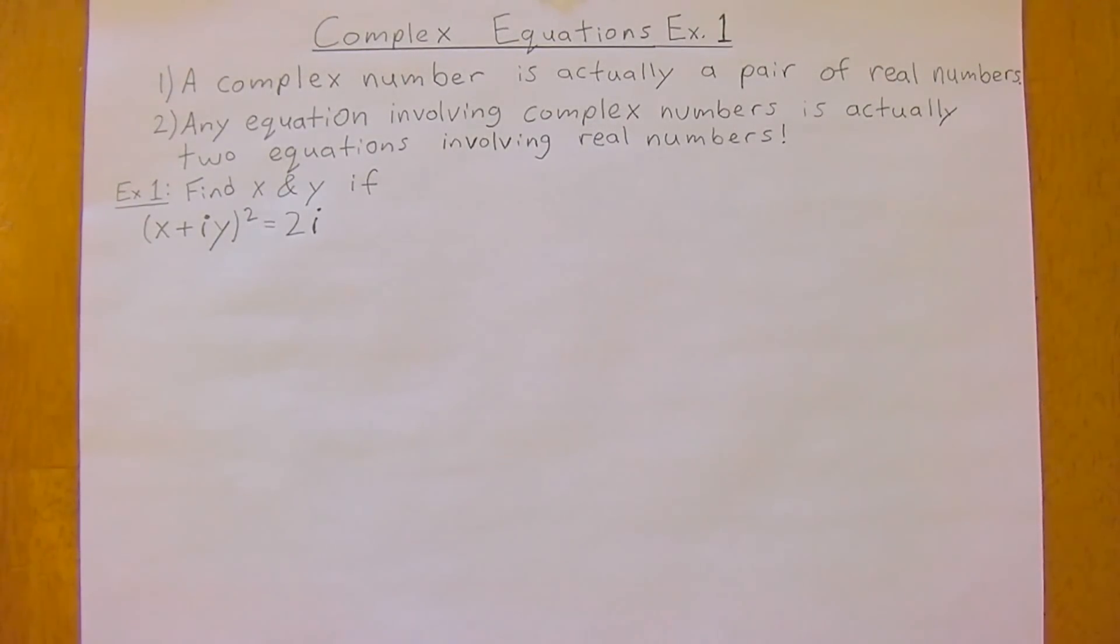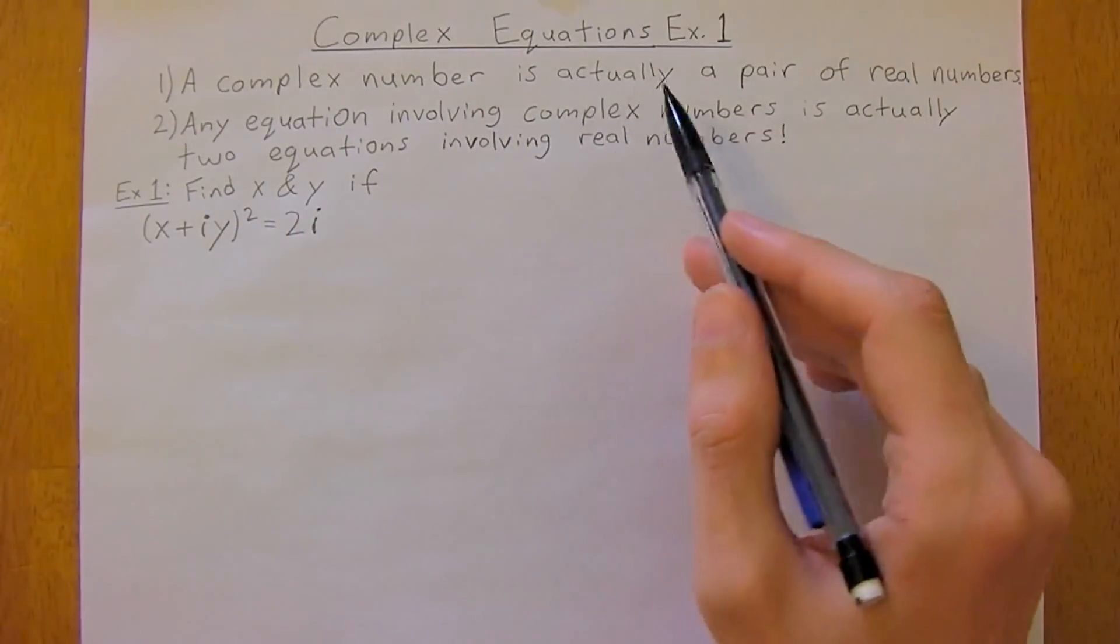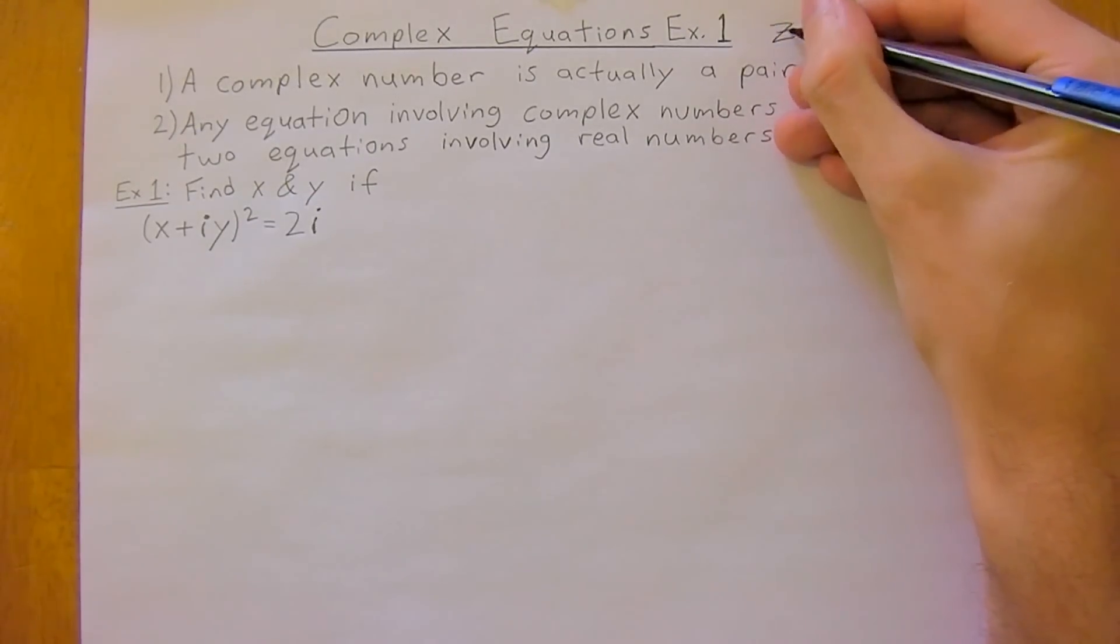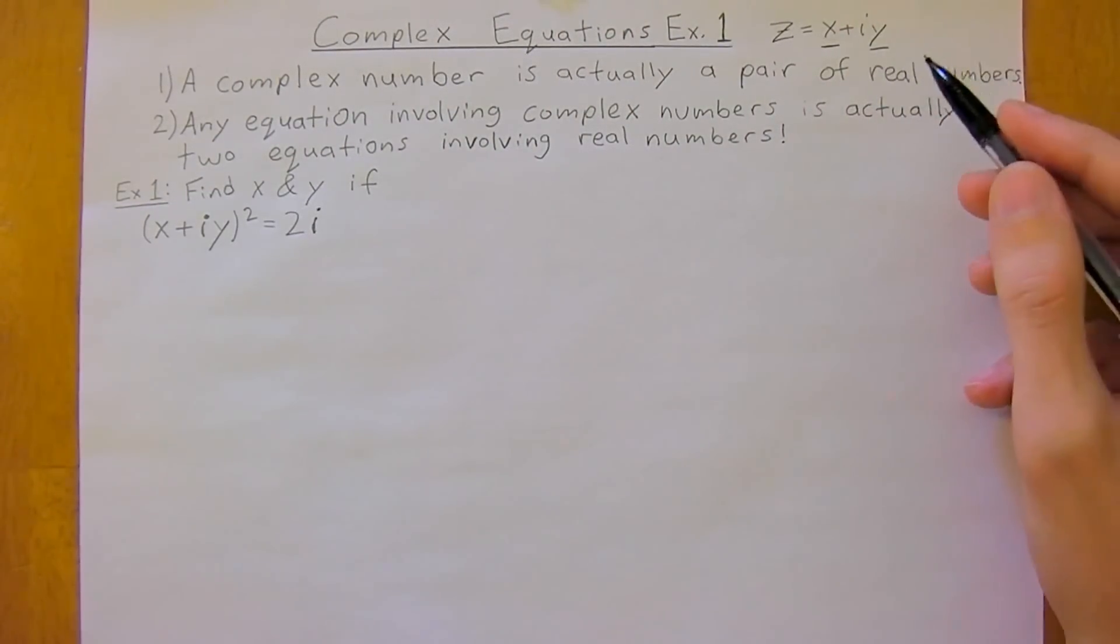When you're dealing with complex equations, there are two very important things to remember. The first is that a complex number is actually a pair of real numbers. Recall that z equals x plus iy, and these are each actually real numbers.